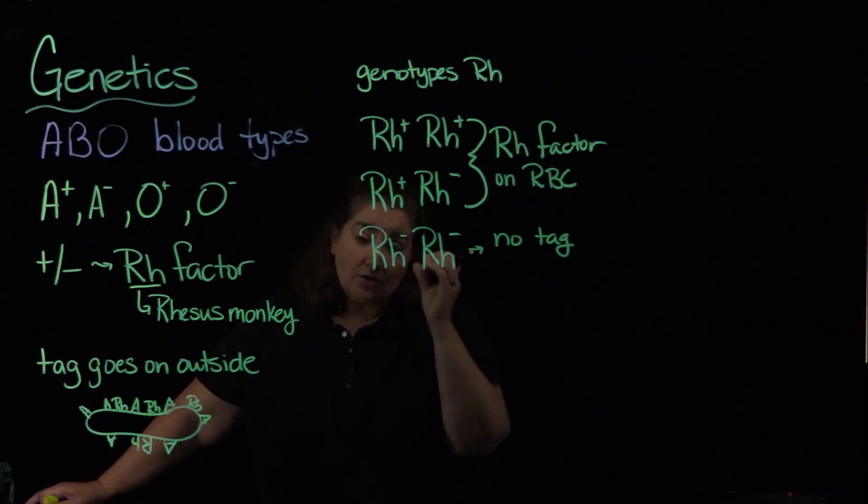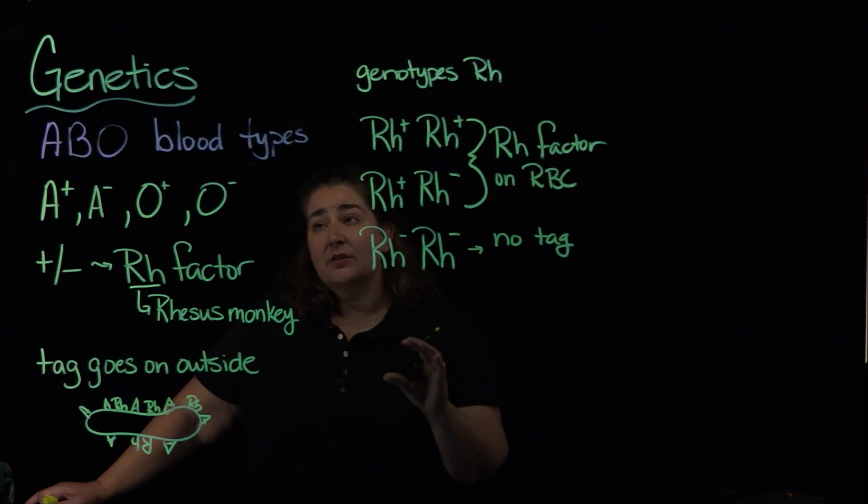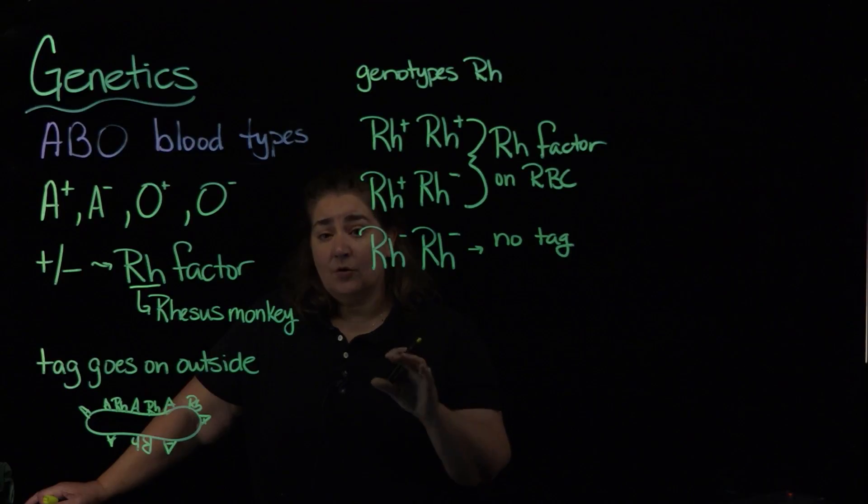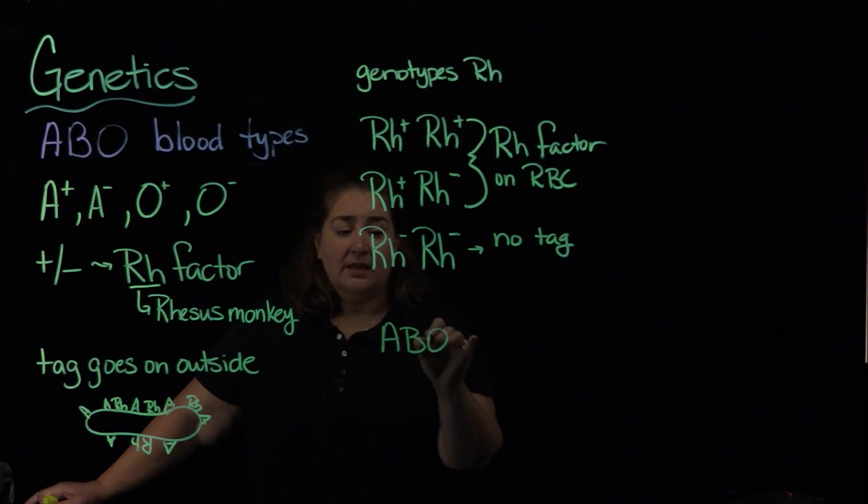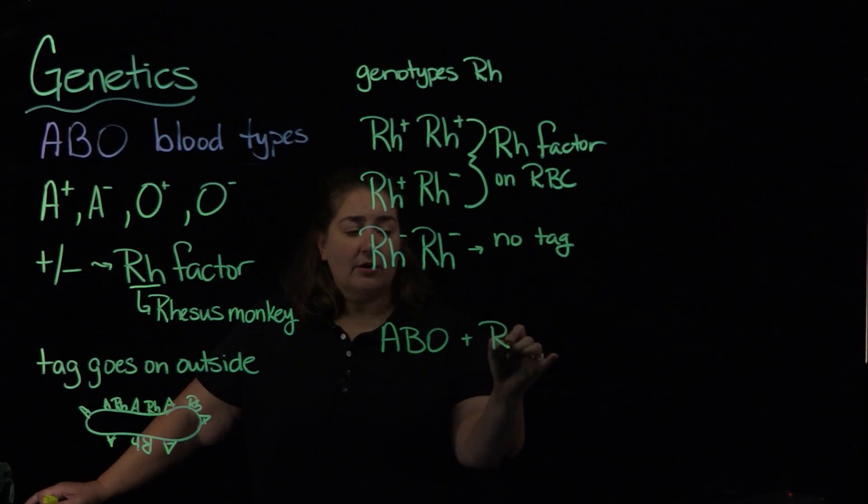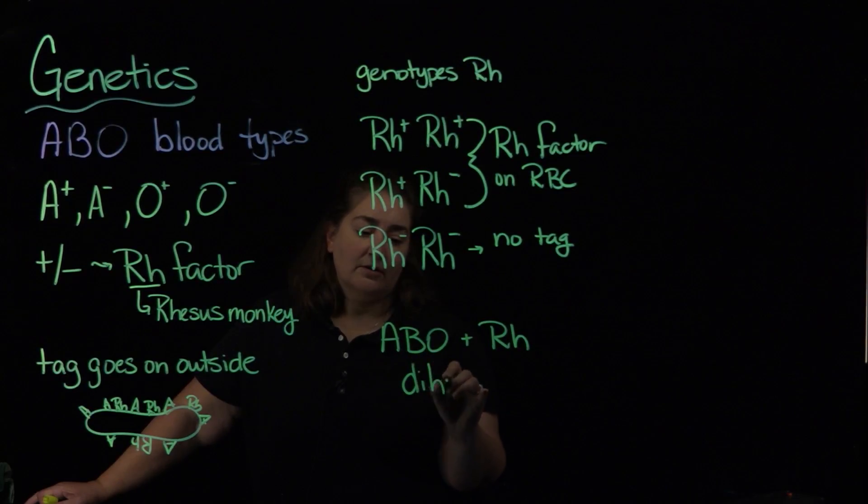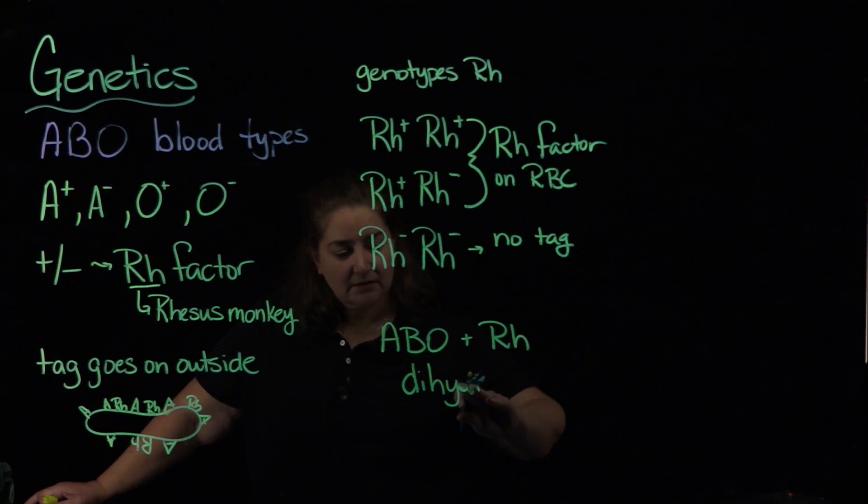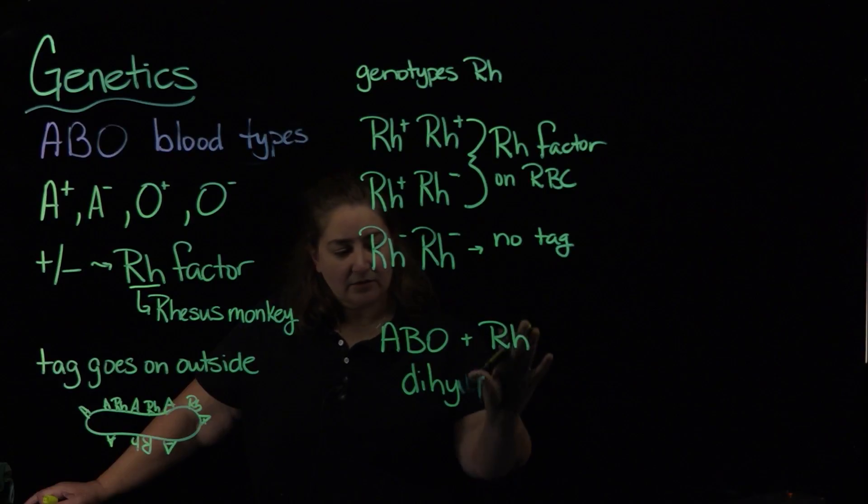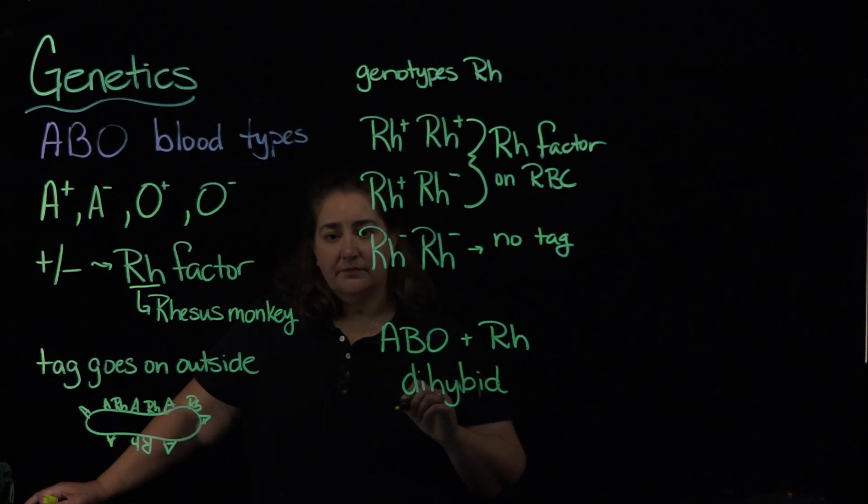So the Rh factor is inherited separately from the ABO. So if you're talking about blood type inheritance, ABO and Rh, talking about that inheritance is a great example of something that's a dihybrid cross.